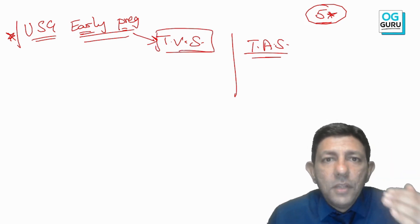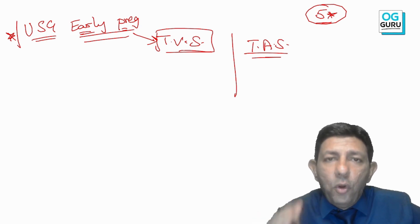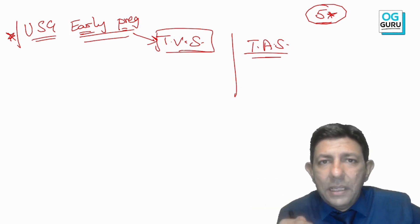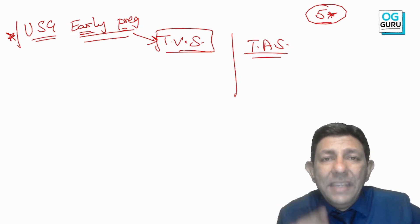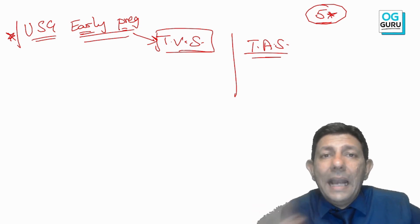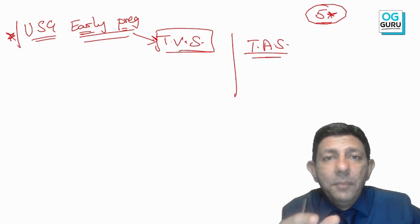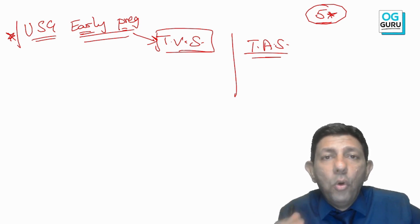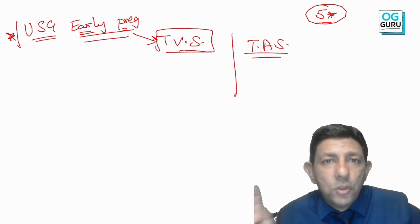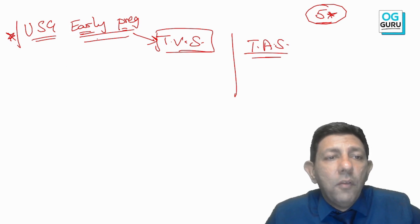There is a fixed sequence of events. Please understand: from now till the end of the obstetric lecture, whenever we say any number of weeks, it is always from the first day of the last menstrual period (LMP). So every time I mention weeks, it is from LMP.